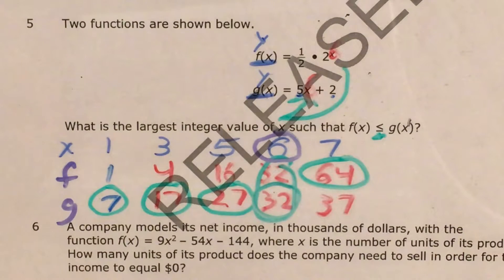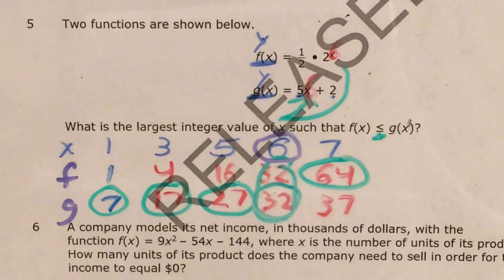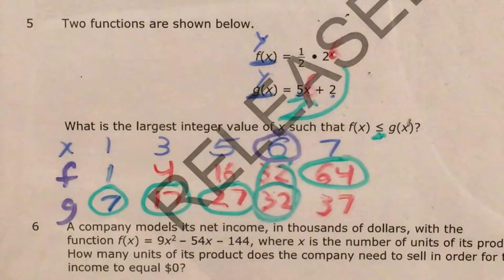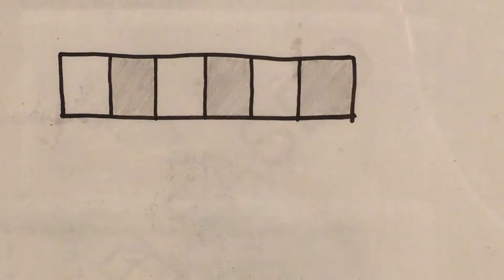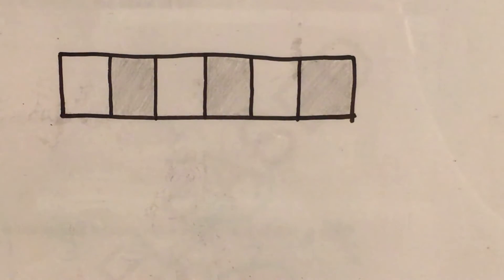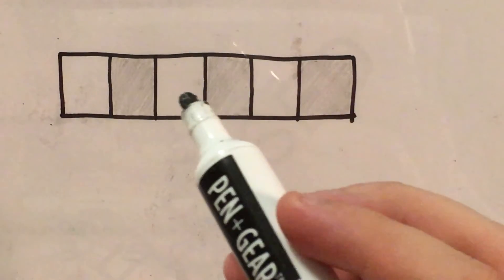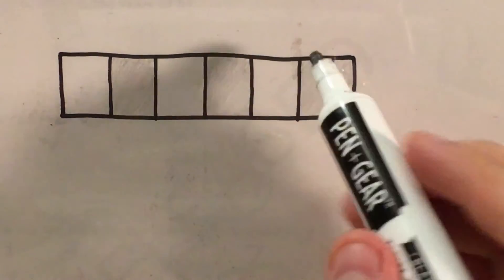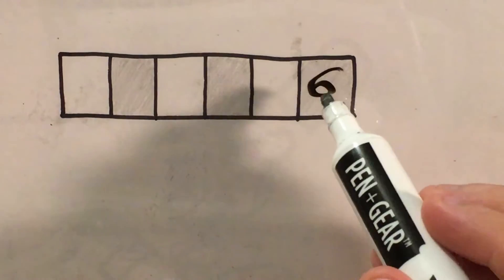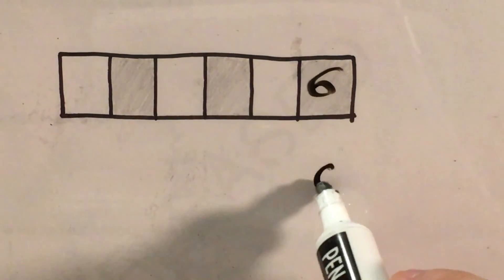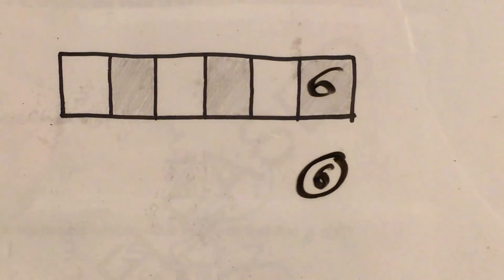The key to a problem like this is looking at your patterns and reading the problem very carefully, as well as doing the math of actually plugging in the numbers carefully. Now I need to demonstrate how to respond using the gridded response form for anyone taking the paper test. My answer was 6 — the biggest number that gives f of x less than or equal to g of x. I write 6 in the box, bubble in the 6, and that's it.